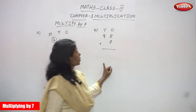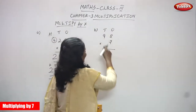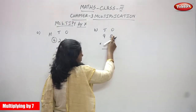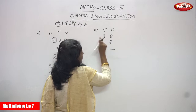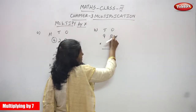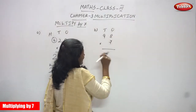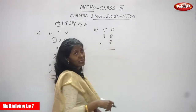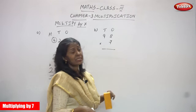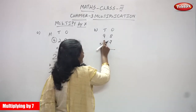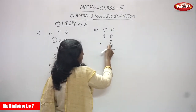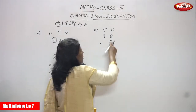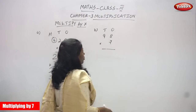Now we are going to see the second sum, that is B: 98 into 7. The ones place value is 8 and the tens place value is 9. So 98 is going to be multiplied by 7.